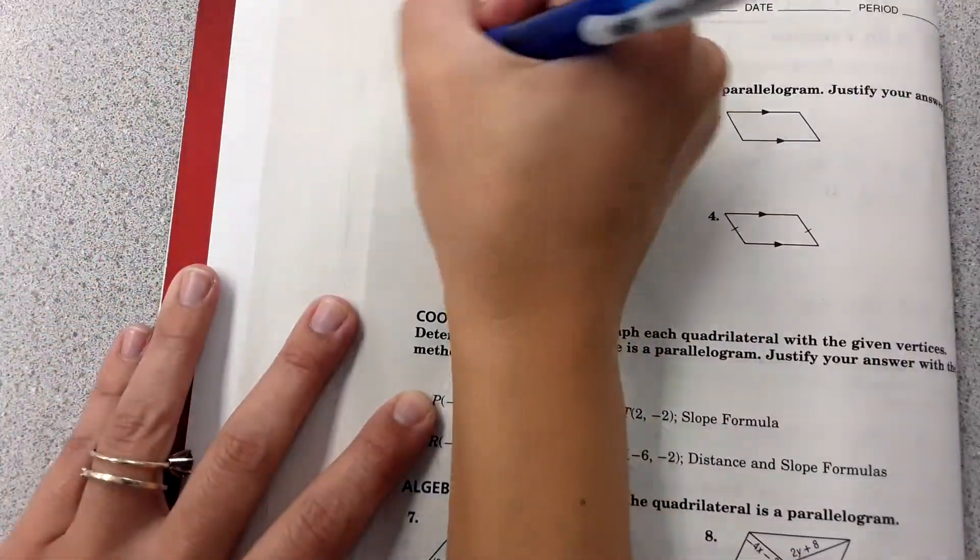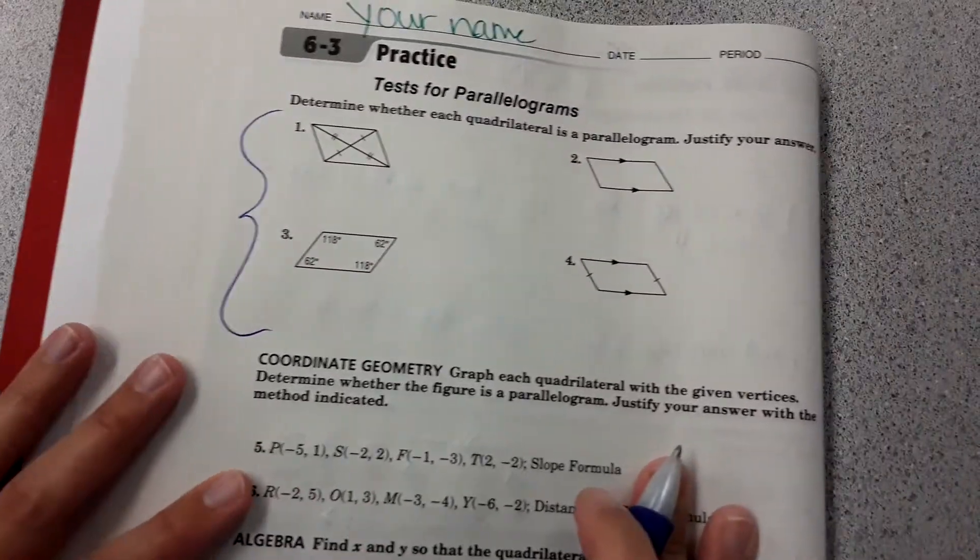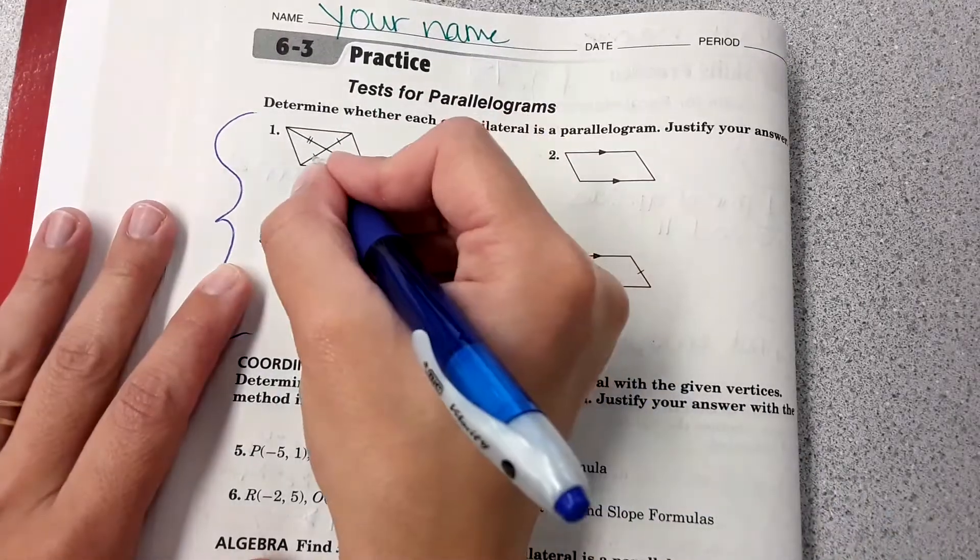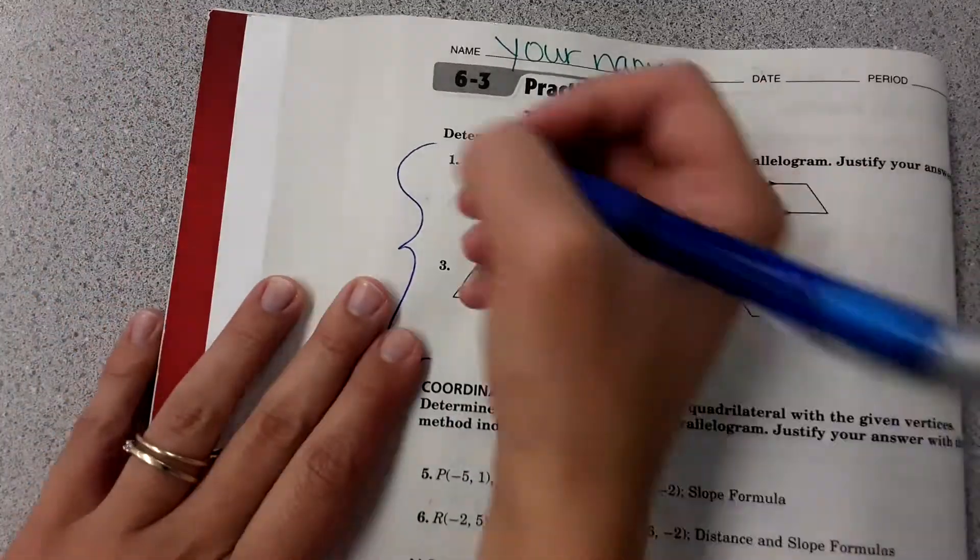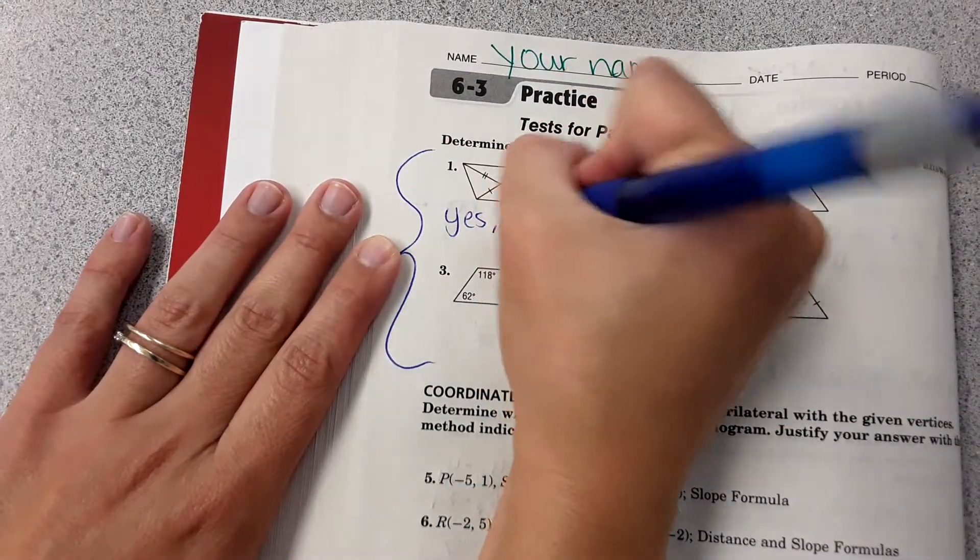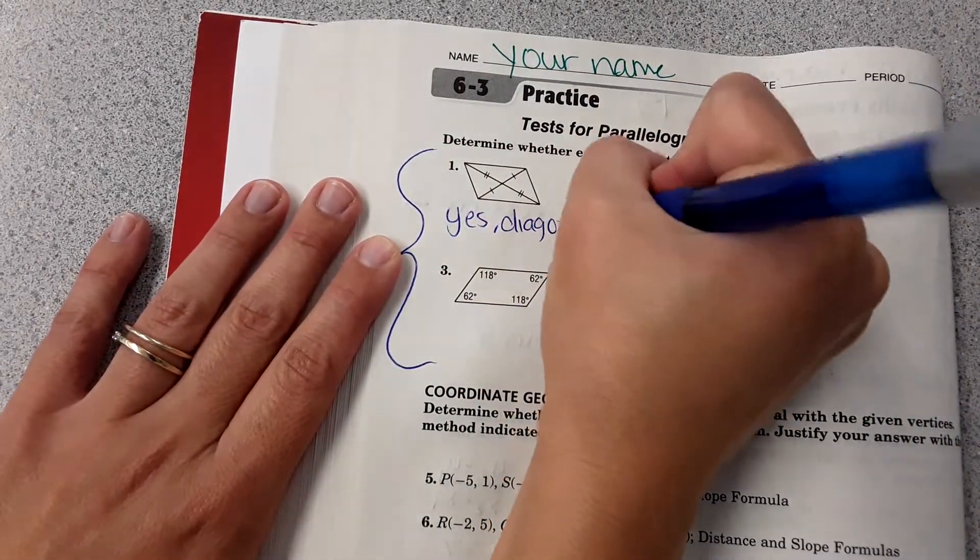We're going to flip to the back and just do the top four problems there. So number one shows that the diagonals are bisecting each other. So yes, that's a parallelogram. Diagonals bisect each other.